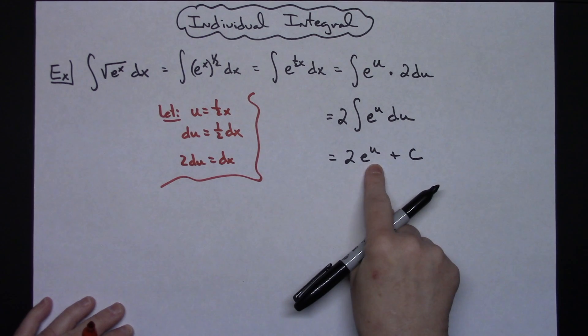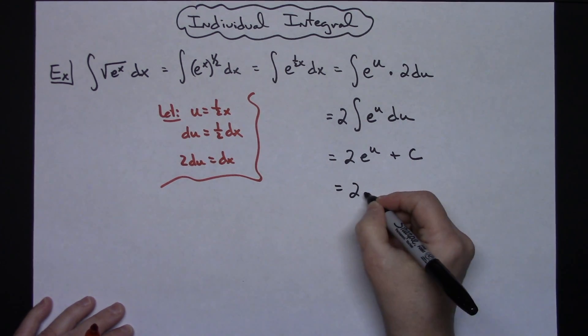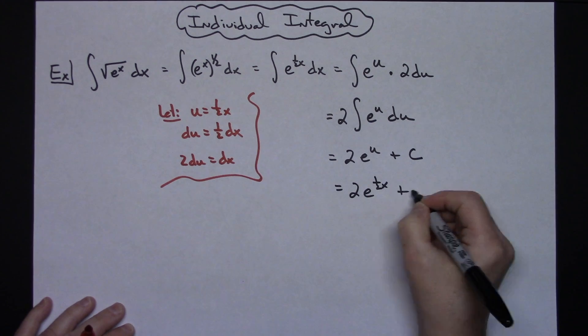And my final step is to put that one-half x back in. So 2 e raised to the one-half x plus c.